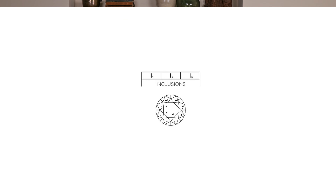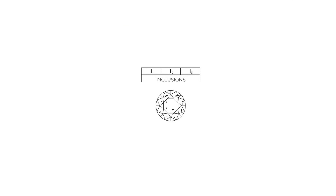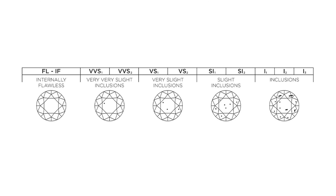Up next is clarity. Because moissanites are grown in laboratories, they will not contain any clarity imperfections visible to the naked eye. Diamonds, on the other hand, have their own clarity grading scale and can range from having inclusions that are visible to diamonds that are considered eye clean, meaning you won't see any inclusions with your naked eye.